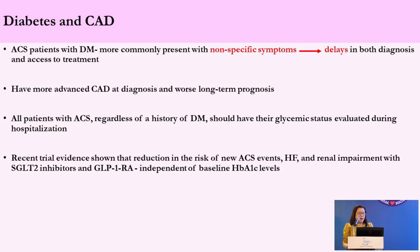Regarding diabetes and coronary artery disease: ACS patients with diabetes more commonly present with non-specific symptoms, leading to delay in both diagnosis and access to treatment. They have more advanced coronary artery disease at diagnosis and worse long-term prognosis. All patients with ACS, regardless of history of diabetes, should have their glycemic status evaluated during hospitalization. Recent trial evidence shows reduction in risk of new ACS events, heart failure, or renal impairment with SGLT2 inhibitors and GLP-1 receptor agonists, independent of baseline HbA1c levels.